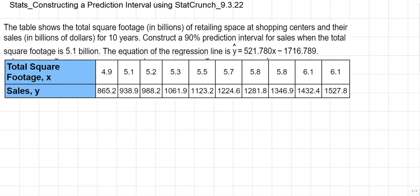The equation of the regression line is Y hat equals 521.780X minus 1,716.789. And then we're given the table with total square footage representing our X values and sales representing our Y values. Remember that these sales are in billions of dollars.